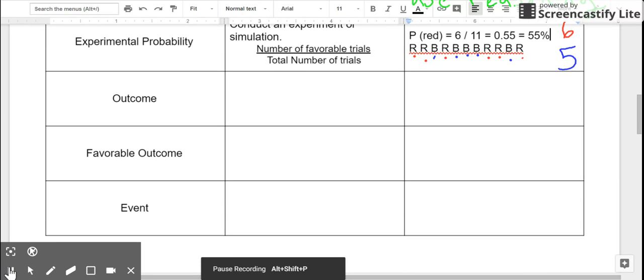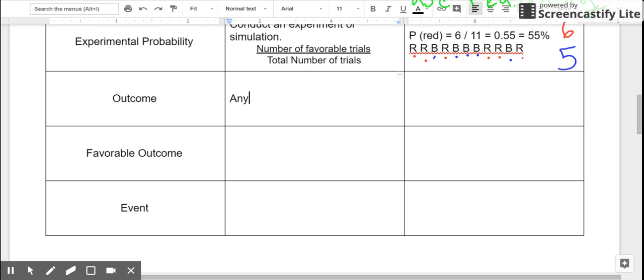The last three words we need to define are outcome, favorable outcome, and event. So we've used some of these words already. So an outcome is any possible occurrence in any probability event. So with our example with the bag, the possible outcomes were drawing a red marble or drawing a blue marble.